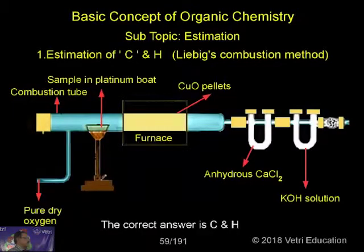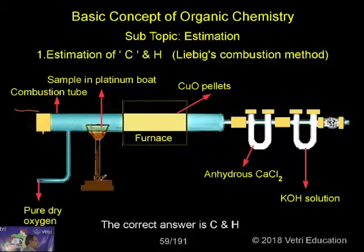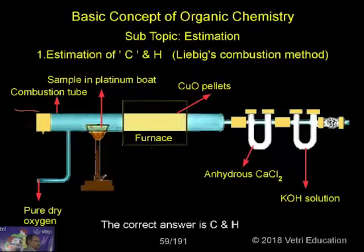This is the apparatus used for Liebig's combustion method. There is a combustion tube which is heated with a furnace. Inside, there will be a platinum board where a known amount of substance will be kept. First, pure oxygen will be passed, and then the substance is heated by passing oxygen with the furnace. Carbon will be converted into carbon dioxide and hydrogen will be converted into water.